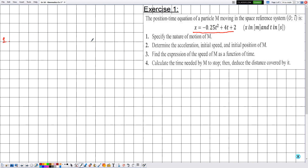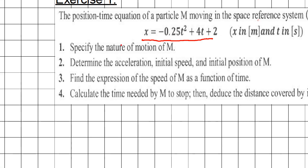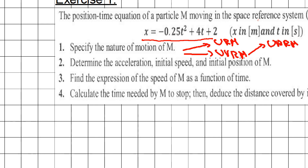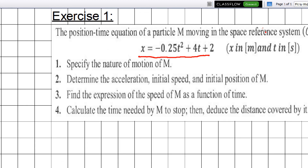Number one: specify the nature of motion of M. By 'specify' we need to state with justification whether the motion is URM or UVRM. For UVRM we also need to state whether it is UARM or UDRM. Notice that this equation includes t squared, so it is in the form of the general position-time equation.